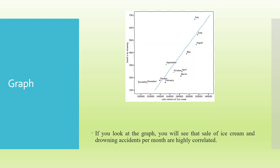Have a look at this graph on the screen. You will see that the sales of ice cream and drowning accidents per month are highly correlated. On the x-axis there is cubic meters of ice cream sold and on the y-axis that's death by drowning. There is a linear relationship. We have taken the data points at different time intervals according to the months, and when we pass the line, we get a linear relationship — these two variables are highly correlated.